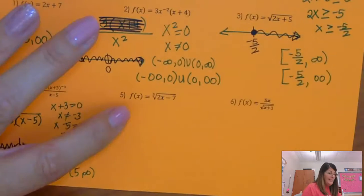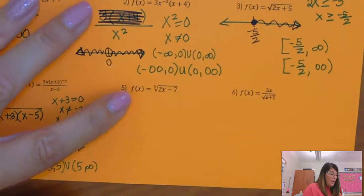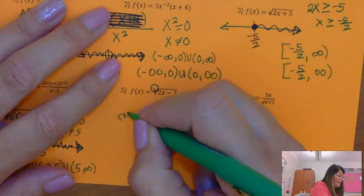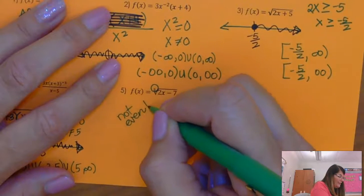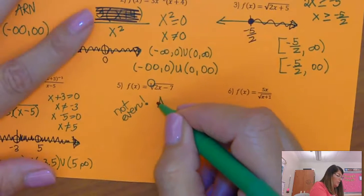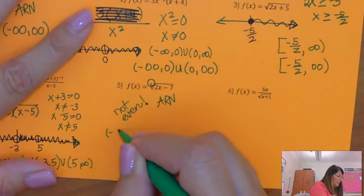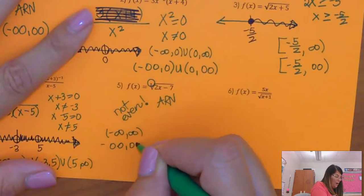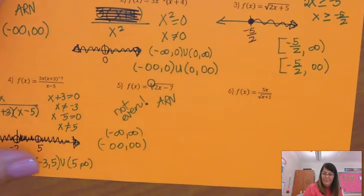Okay. Now let's look at this next one. So see this 3 right here? That is not even, right? So my limitations only apply to even roots. So this is all real numbers. So negative infinity to positive infinity or negative infinity, infinity to positive infinity.